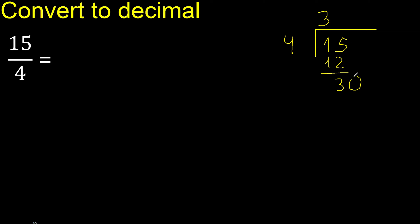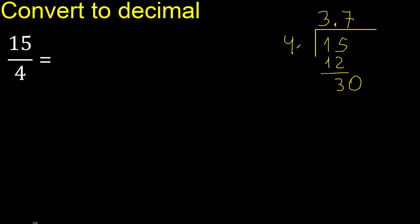Complete with 0, and place the decimal point — point only once. We now have 30. 4 multiplied by which number? 4 multiplied by 8 is 32 — that is greater. 4 multiplied by 7 is 28.